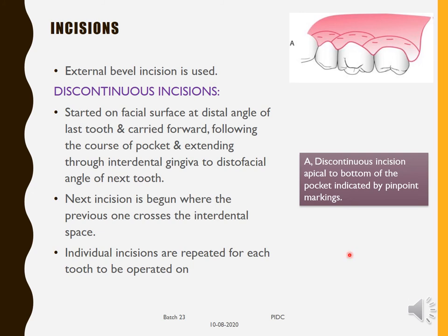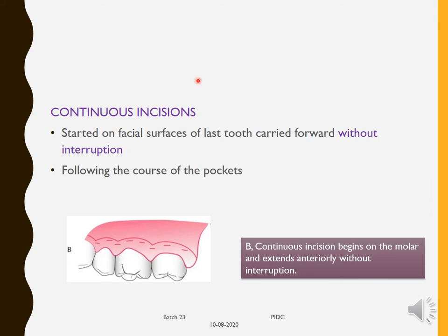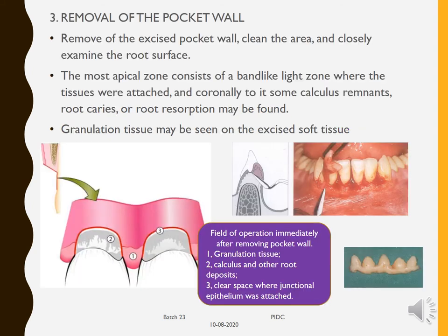There are two types of incision used. A discontinuous incision starts on the facial surface of the distal angle of the last tooth, follows the course of the pocket to the interdental gingiva, ends at the distal facial angle of the next tooth, and the next incision begins where the previous one crossed the interdental space — repeated for each tooth. A continuous incision starts on the facial surface of the last tooth and is carried forward without interruption, following the course of the pockets.